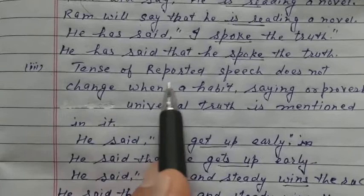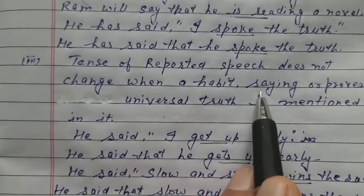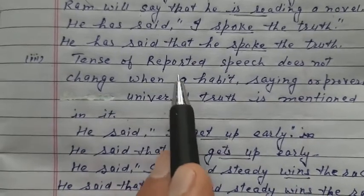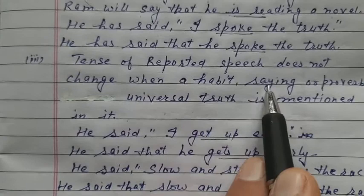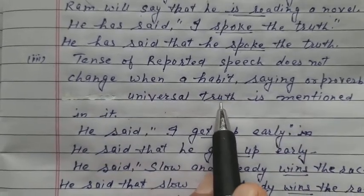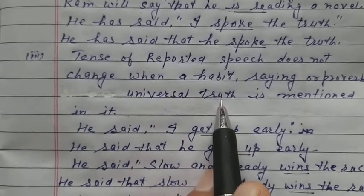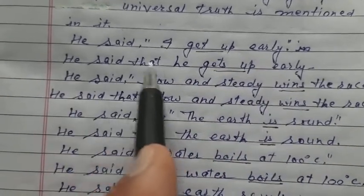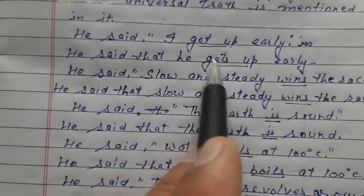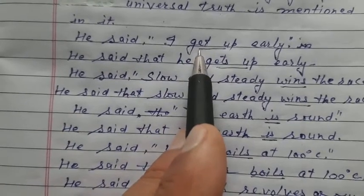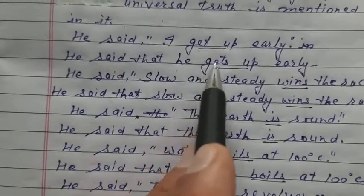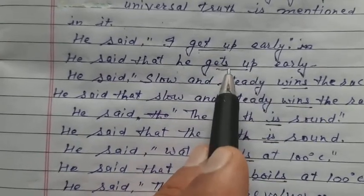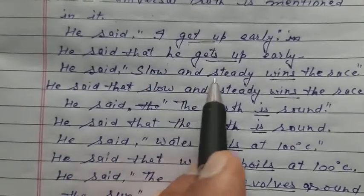Next, the tense of reported speech does not change when a habit, saying, proverb, or universal truth is mentioned in it. If the reported speech contains a description of a habit, a proverb, or a universal truth, the tense does not change. For example: 'He said I get up early' — this is a habit — indirect: 'He said that he gets up early.' Get changes into gets because I changes to he, and with he we use S/ES with the first form of the verb.